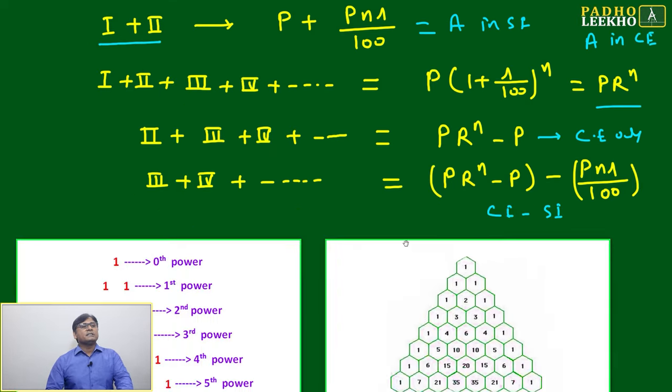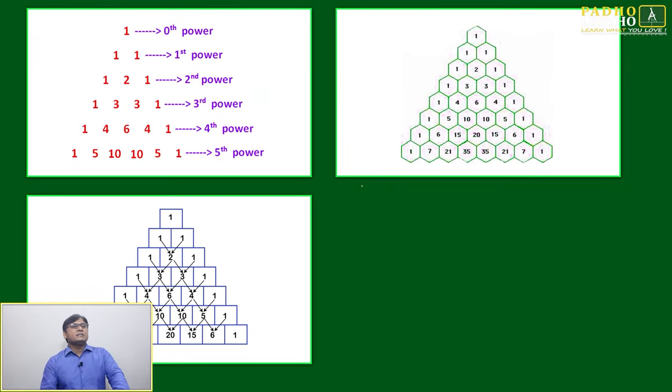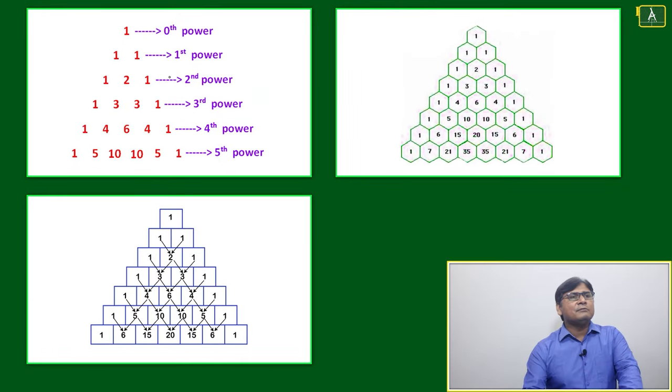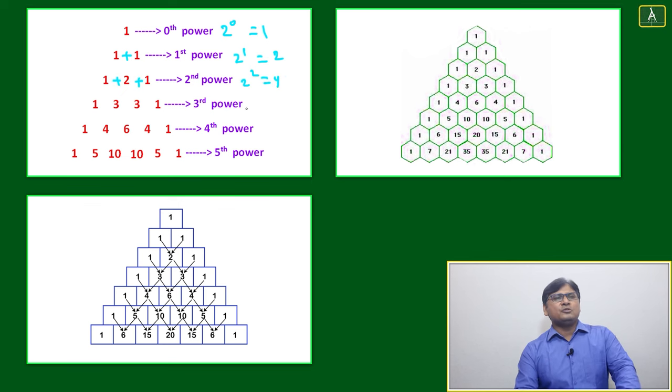This Pascal's triangle, we'll try to understand. We have another explanation of Pascal's triangle. This is 2 to the power 0, that is equal to 1. That is 2 to the power 1, that is equal to 2, that is 1 plus 1. Now 2 square, that is 4, you just take 1 plus 2 plus 1. Many things you can make out based on the Pascal's triangle. 2 to the power 3, it will become 8, 1 plus 3 plus 3 plus 1.